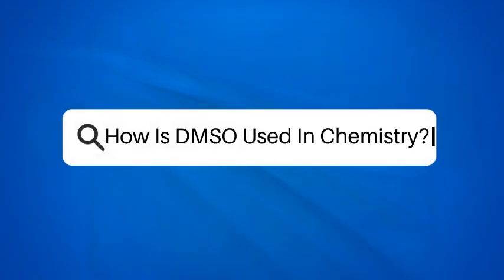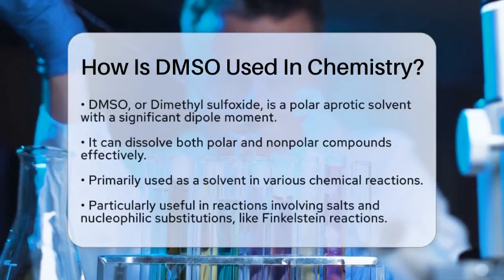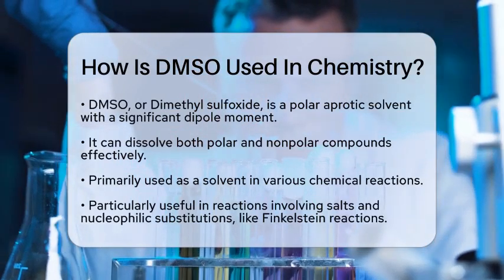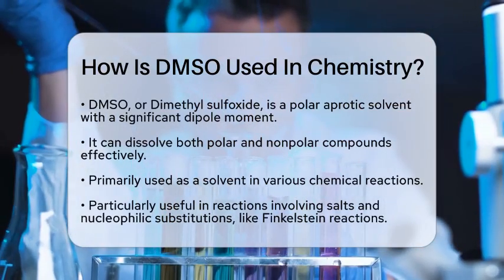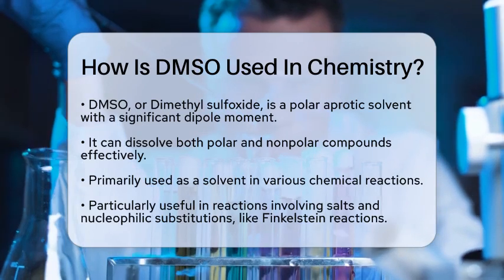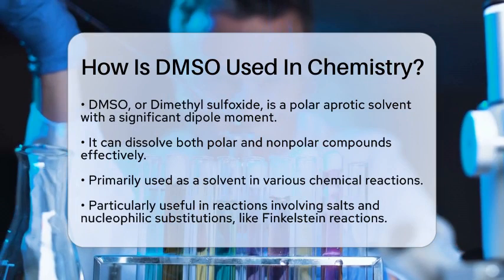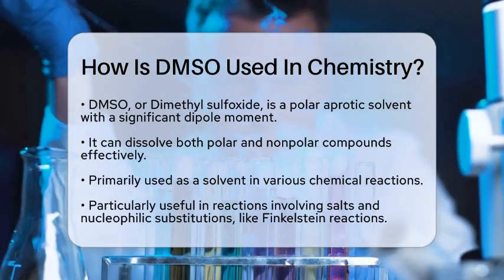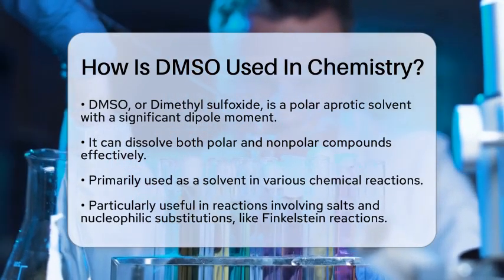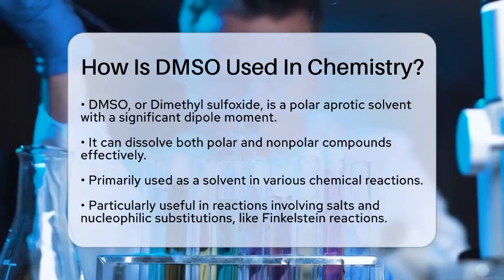How is DMSO used in chemistry? Have you ever wondered how certain chemicals can dissolve a wide variety of substances? One such chemical is dimethyl sulfoxide, often abbreviated as DMSO. This compound is a polar aprotic solvent, which means it has a significant dipole moment but does not donate hydrogen bonds. This unique property allows DMSO to effectively dissolve both polar and nonpolar compounds.